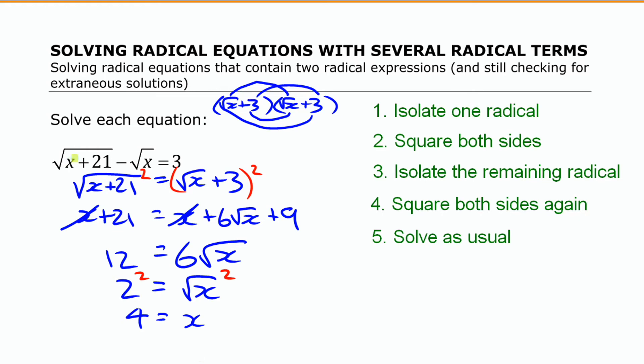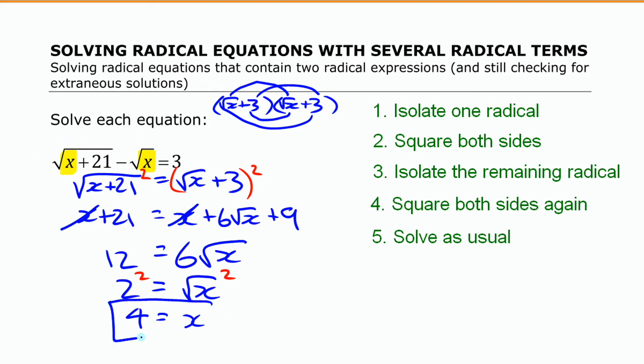Before I say that's my final solution, I need to check that x equals 4 works in the original equation. Substituting 4 for x: square root of 4 plus 21 is square root of 25, which is 5. Minus square root of 4, which is 2. So 5 minus 2 is 3. Since both sides are equal, x equals 4 is the solution.